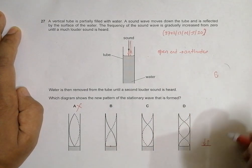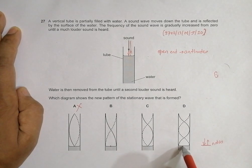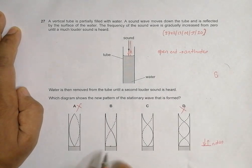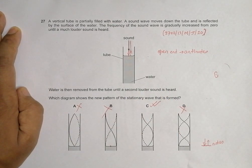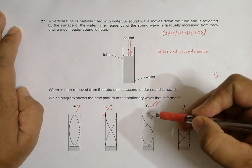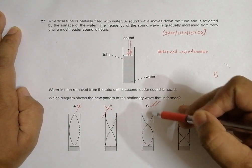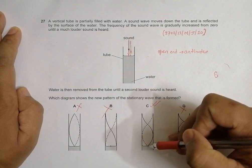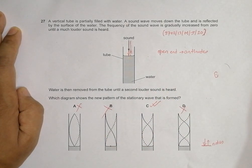Looking at the answer choices: antinodes at the open end — not correct here, not correct here. The only correct one is choice C. We don't even need to worry about which harmonic it is. What matters is: antinode at the open end and a node at the closed/water end — maximum vibration at the open end and zero vibration at the closed end. Choice C fulfills that criteria and is the correct answer.